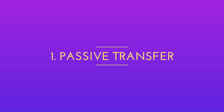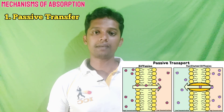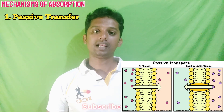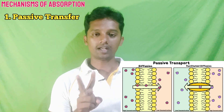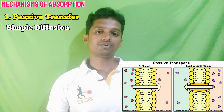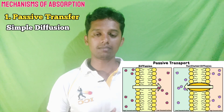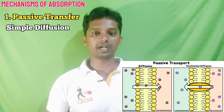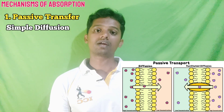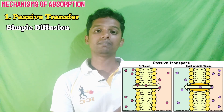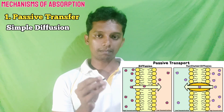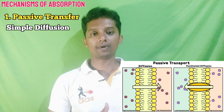The first category is passive transfer — absorption that takes place without the need for energy. There are two types: simple diffusion and filtration. Simple diffusion is the process of transport of substances across the biological membrane in the direction of its own concentration gradient. For example, lipid-soluble substances can easily cross the lipid bilayer along the concentration gradient. This is called simple diffusion.